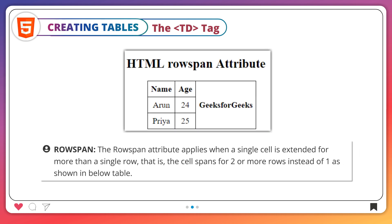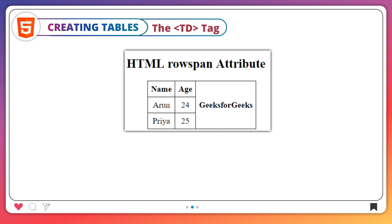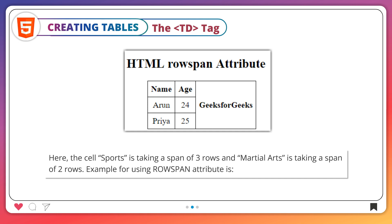Row span: the rowspan attribute applies when a single cell is extended for more than a single row. That is, the cell spans for two or more rows instead of one, as shown in the table below. Here, the cell Sports is taking a span of three rows and Martial Arts is taking a span of two rows. For example, for using the rowspan attribute.